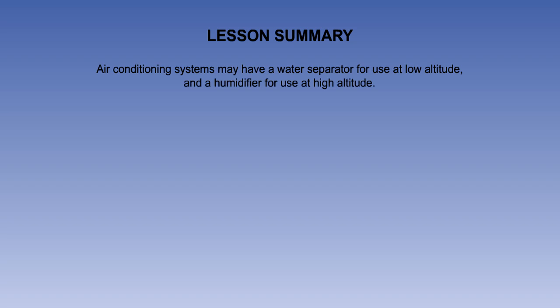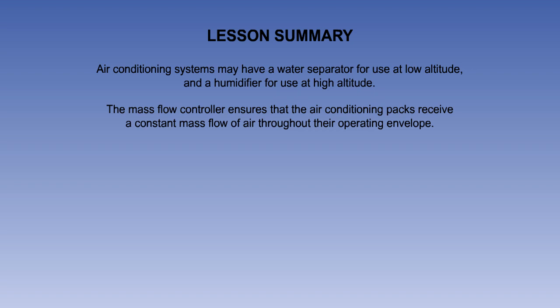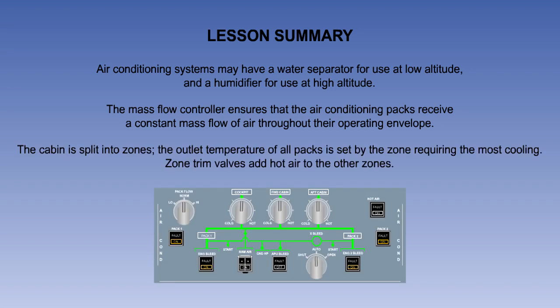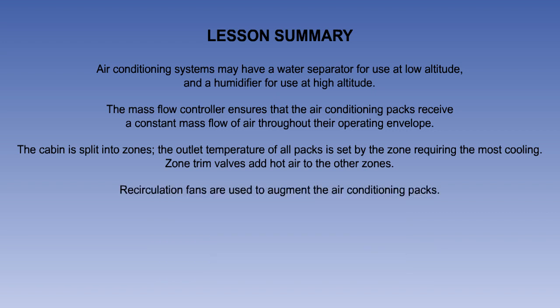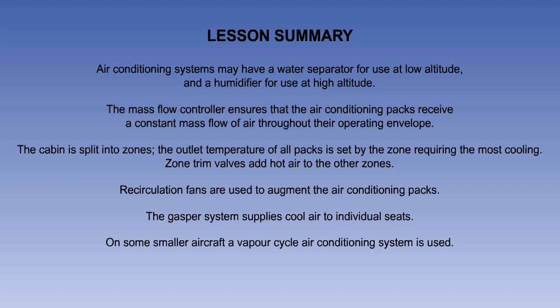That is the end of the lesson. You should now know that air conditioning systems may have a centrifugal water separator for use at low altitude, and a humidifier supplied with potable water for use at high altitude. You have seen that the mass flow controller ensures that the air conditioning packs receive a constant mass flow of air throughout their operating envelope. You should know that the cabin is split into a number of zones, and that the outlet temperature of all packs is set by the zone requiring the most cooling. Zone trim valves add hot air to the other zones to satisfy their requirements. Re-circulation fans are used to augment the air conditioning packs. And the gasper system supplies cool air to individual seats. Finally, you should have learned that on some smaller aircraft, a vapour cycle air conditioning system is used.